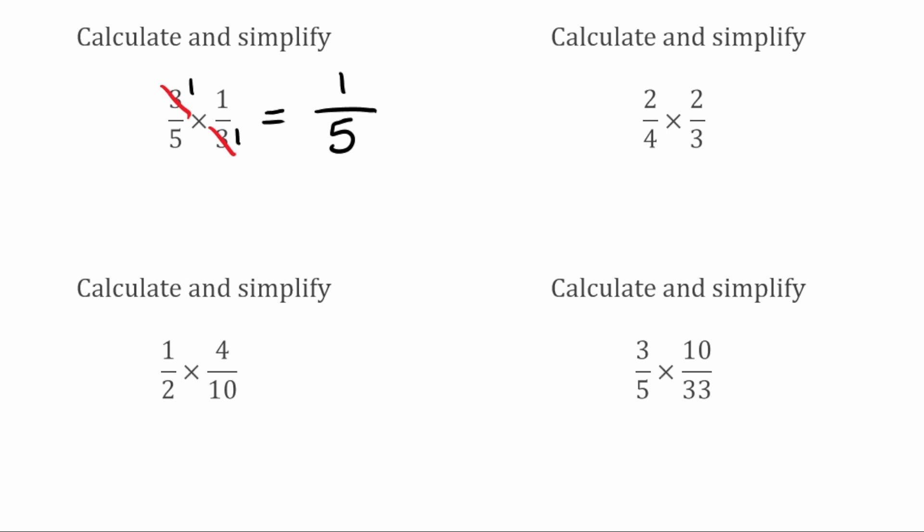For this next question I've got 2 quarters multiplied by 2 thirds. Checking the individual fractions first — we can actually cancel 2 quarters down, because I can divide top and bottom by 2. 2 over 4 divided by 2 becomes 1 over 2, or a half. So 2 quarters is equivalent to a half. Checking 2 thirds — that's in its simplest form, so we can't do anything with that fraction on its own.